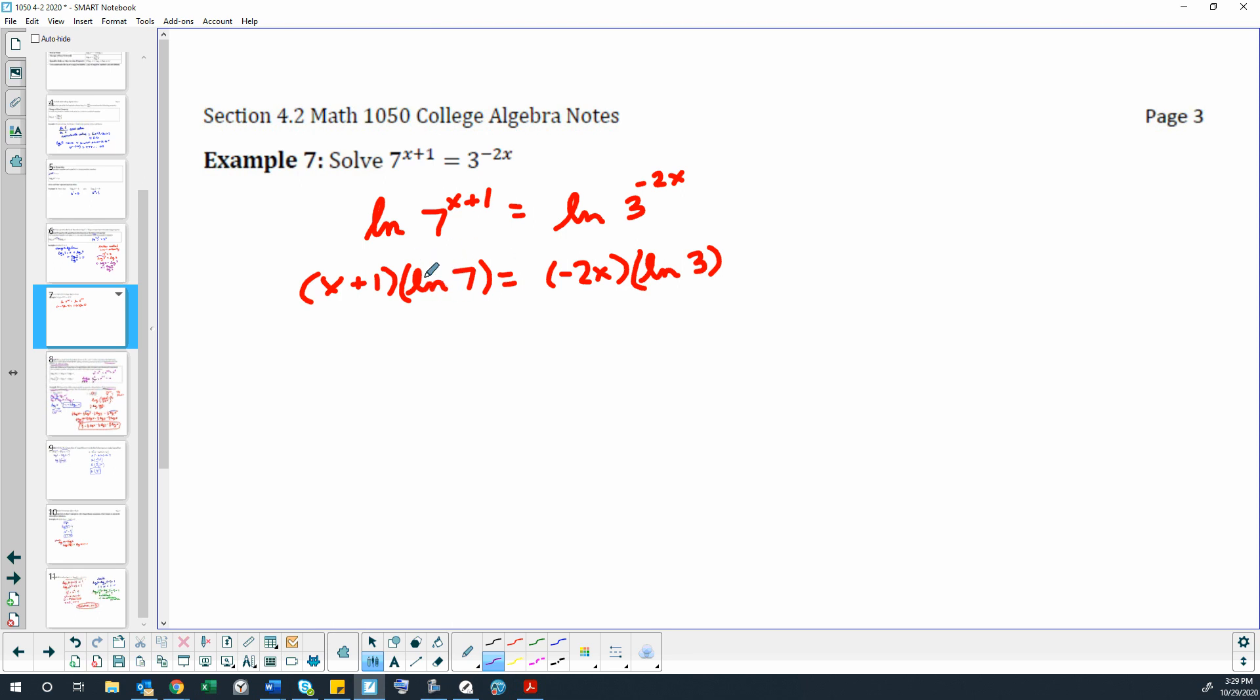So that number can be multiplied times these numbers, one of which is unknown and one of which is known. So we have x times the natural log of 7, and we have 1 times the natural log of 7. And then on this side, I probably didn't need to separate it out like this.